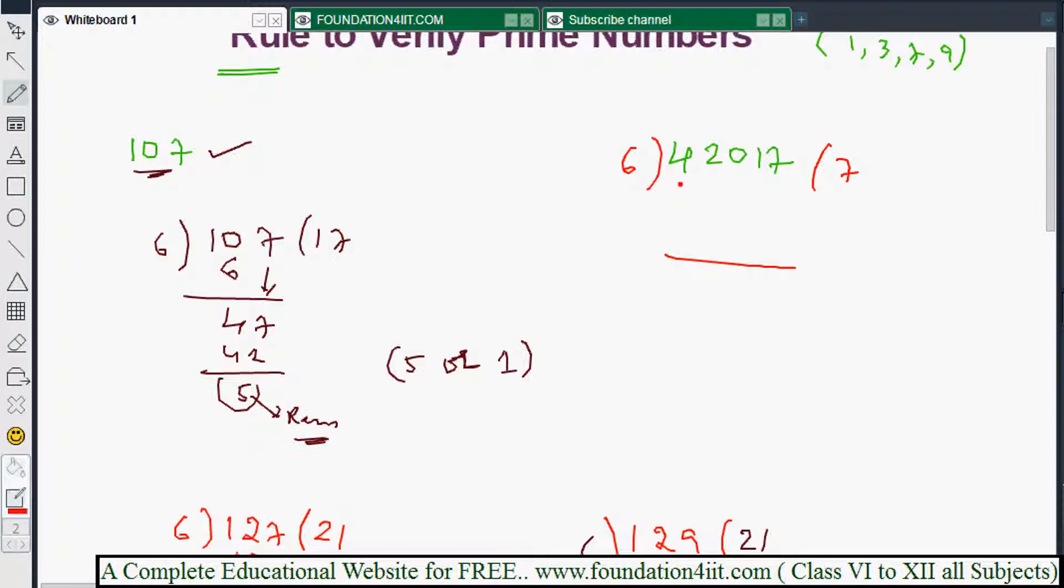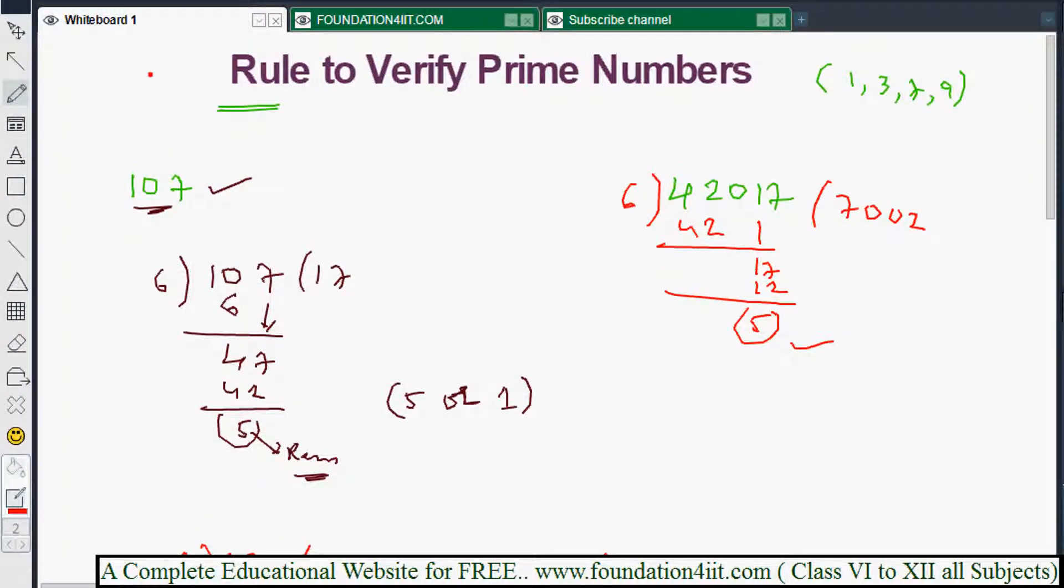6 into 42 is 7, then 0, then 1, then 7. Continue the division process, bringing down digits. After completing the normal division, the remainder is 5. That's it. We only need the remainder. If the remainder is 5 or 1, then it is a prime number.